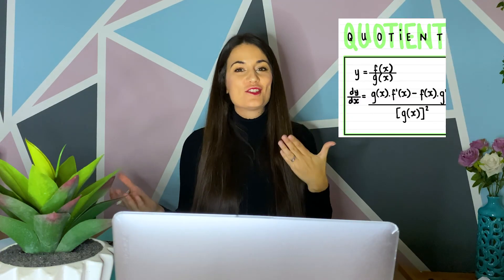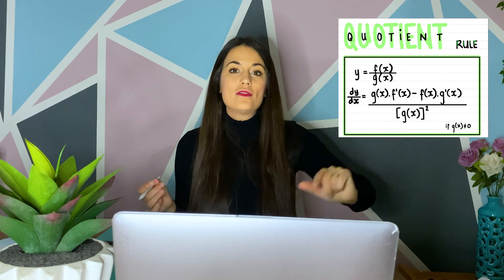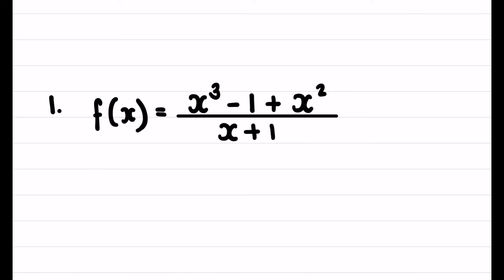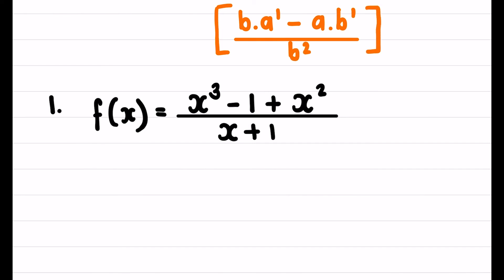If we look at the quotient rule, it applies to two functions divided by each other. We take the denominator times the derivative of the numerator, subtract the numerator times the derivative of the denominator, all over the denominator squared. Using the same letters as the product rule: b times a′ minus a times b′, all divided by b². The only difference from the product rule is the minus instead of plus, and the b² on the bottom.